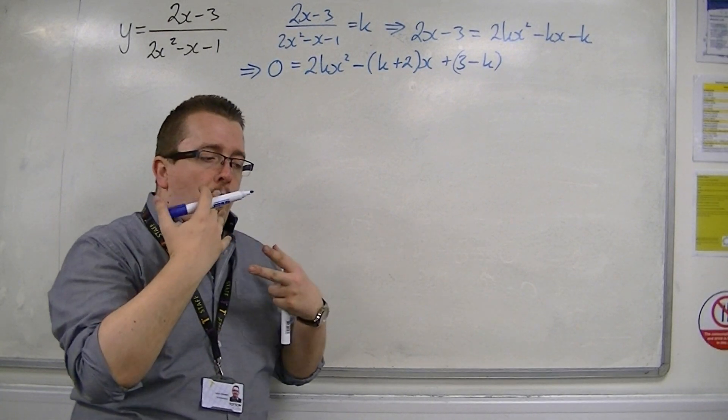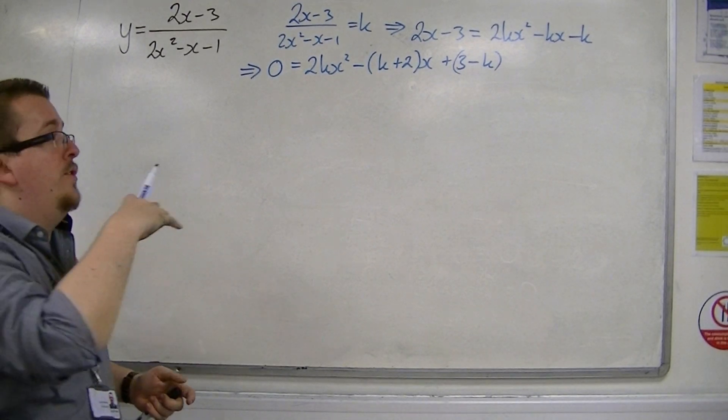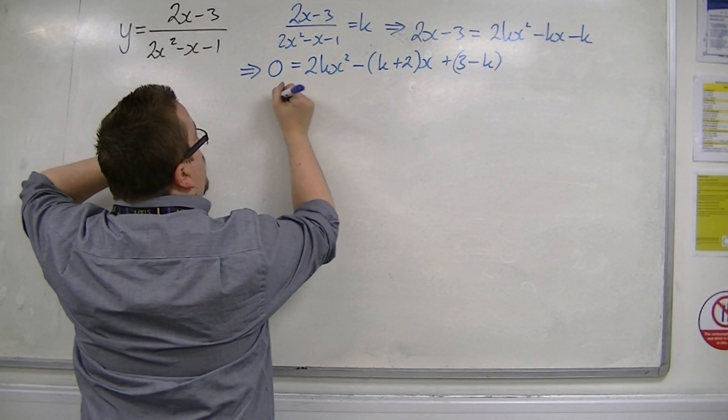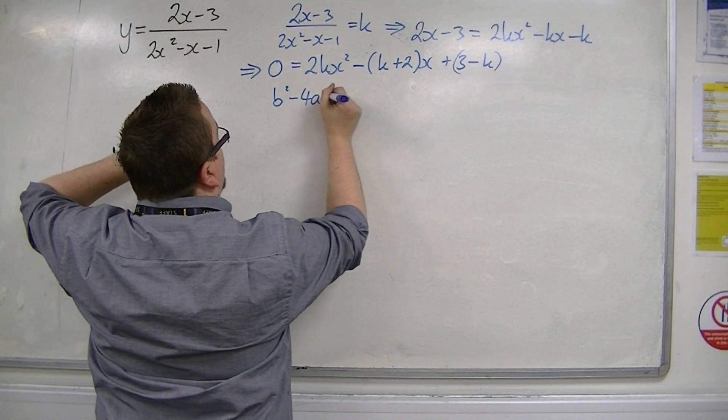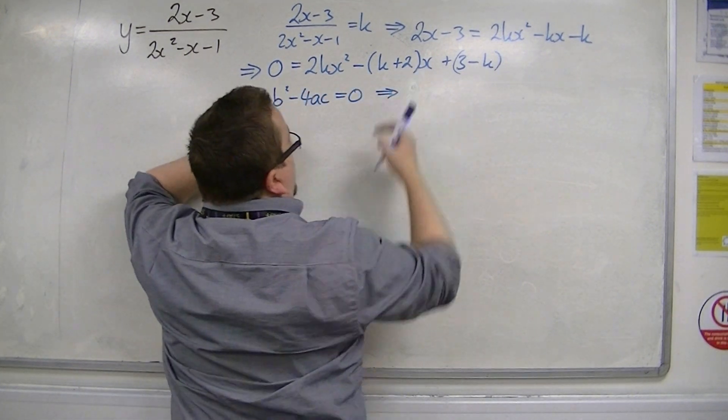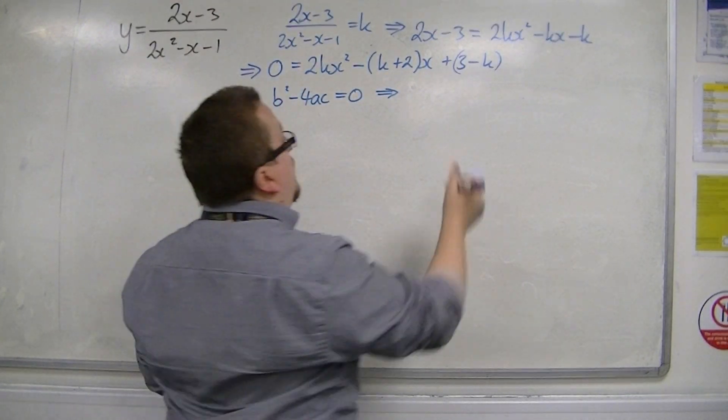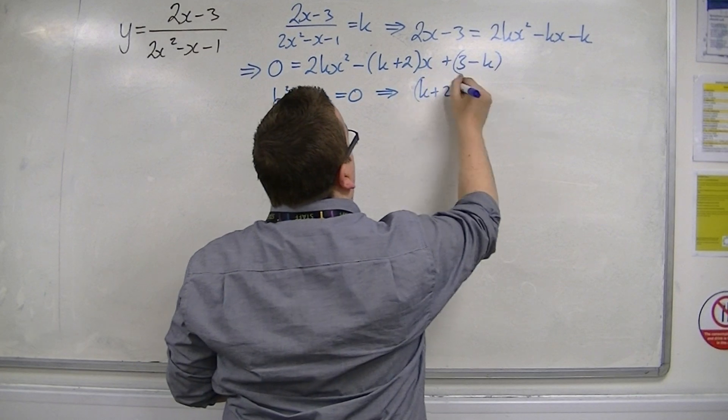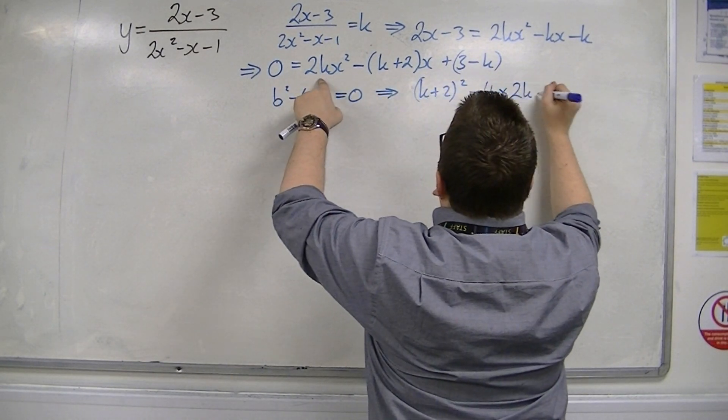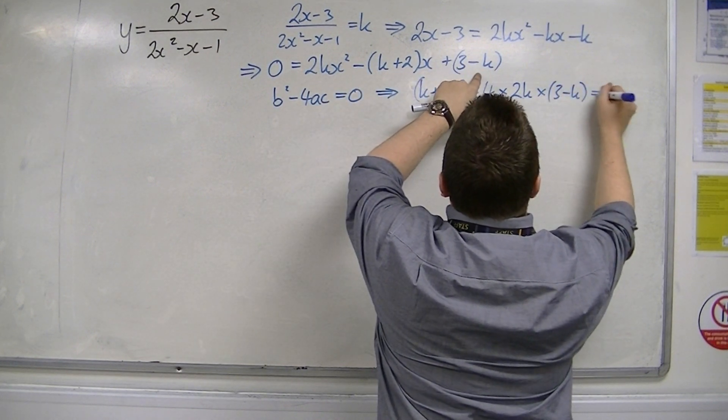Now, I want to find where these y equals k's are tangent to the curve, and so I'm going to look at discriminant to be equal to 0. So, b is minus k plus 2, but when you square it, the negative will disappear. So we're just going to have k plus 2 squared, take away 4 lots of 2k times 3 minus k. That's going to be equal to 0.